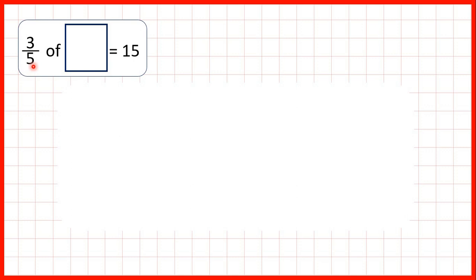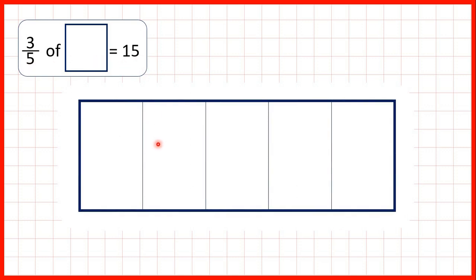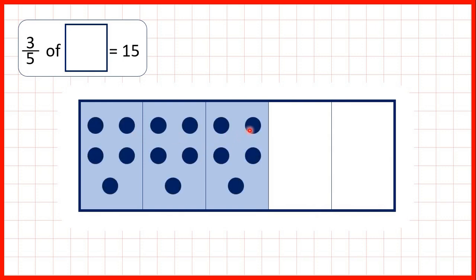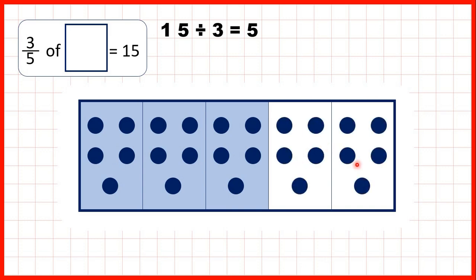Finally, we knew that three-fifths of something was 15. We can show a fraction bar with three-fifths highlighted, and we know that 15 counters need to be shared across those three-fifths. So we divided 15 by 3 to find there are 5 counters in each fifth. If there are 5 counters in each fifth, there must be 5 in the other fifths as well, so we multiplied by 5 to get 25 as our total quantity.